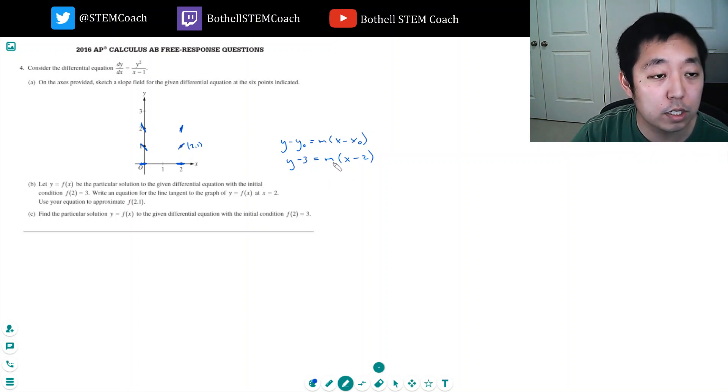So what's the slope? The slope is given by the differential equation. If I plugged in y squared, the y value is 3, so that's 9 over 2 minus 1, that's 1, that's equal to 9. So it's y minus 3 equals 9 times x minus 2.